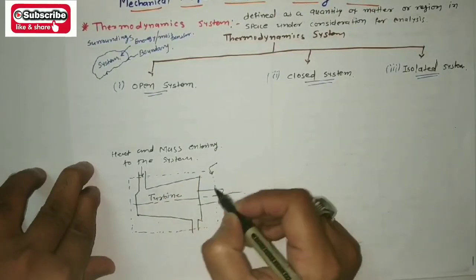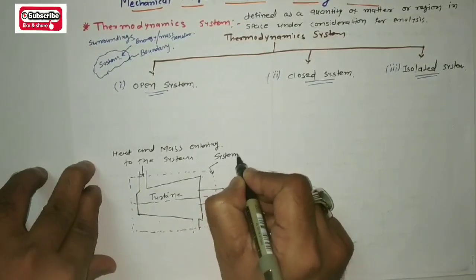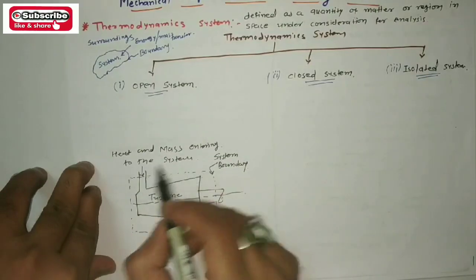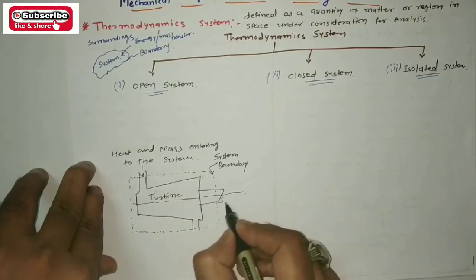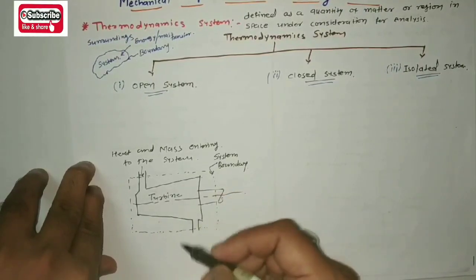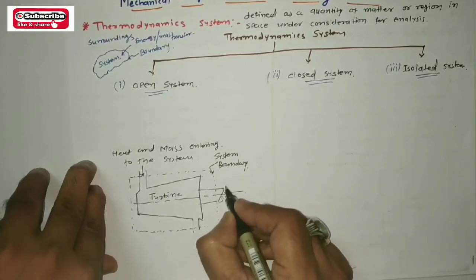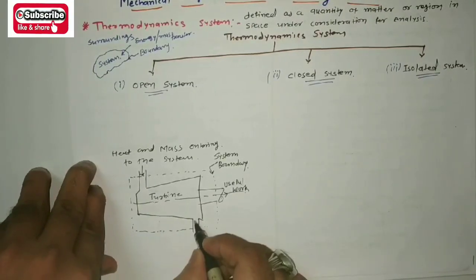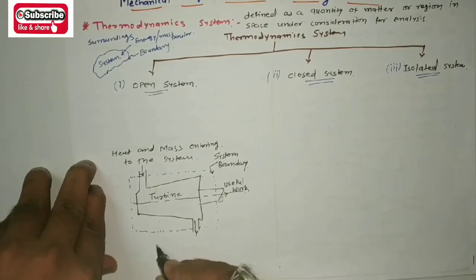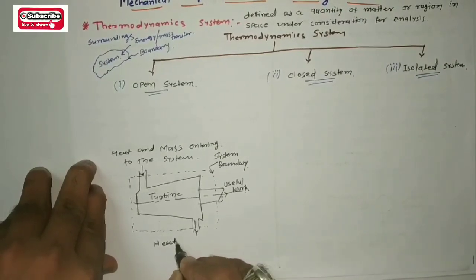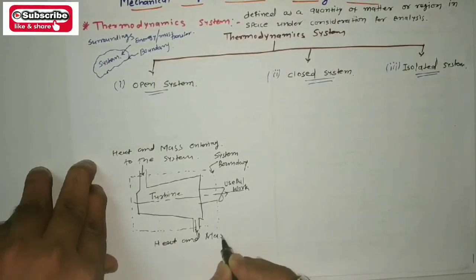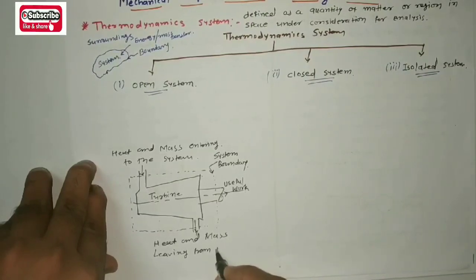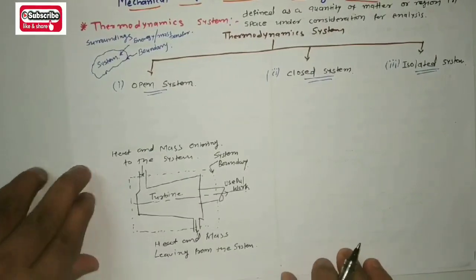This represents the system boundary. Heat and mass are entering into the system from that particular boundary. From the shaft, energy is converting into rotation and that will be coming out from that particular shaft as useful work. The rest of the heat and mass will be leaving from the other end.